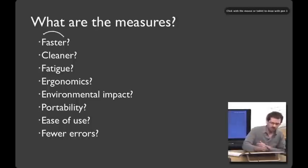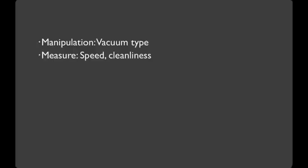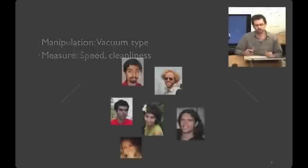We're going to go with faster, and we're going to go with cleaner. So, our manipulation is going to be vacuum type, and our measures are going to be speed and cleanliness. To help illustrate this example, I'm going to recruit the help of my graduate students and TAs.